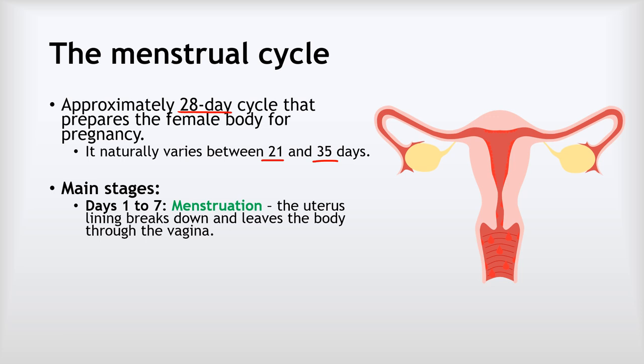The first stage is menstruation, on days one to seven. Menstruation, or your period, is when the uterus lining breaks down and leaves the body through the vagina. That's what the period is — that mixture of blood and soft tissue from the uterus lining breaking down.